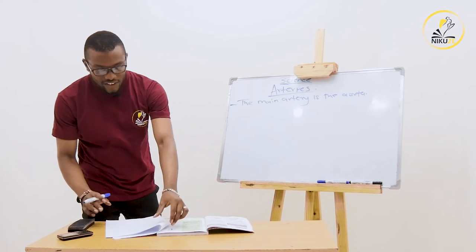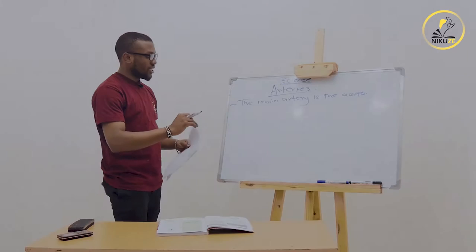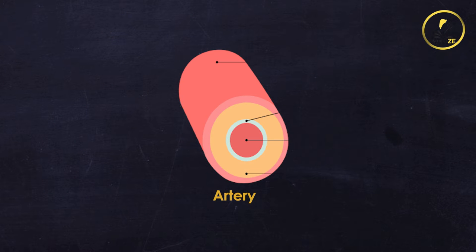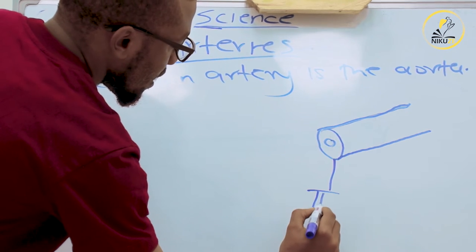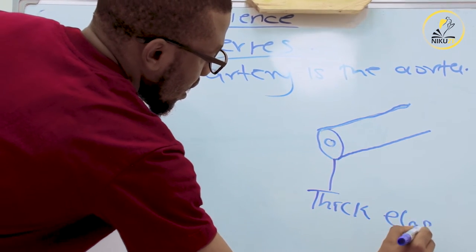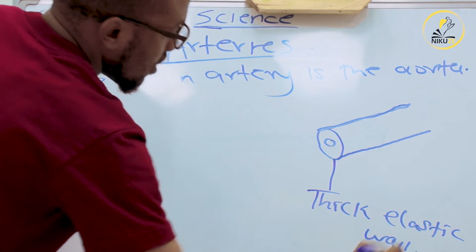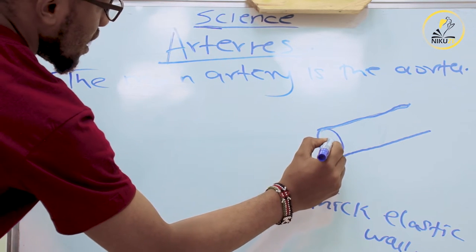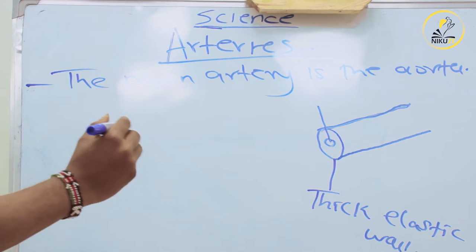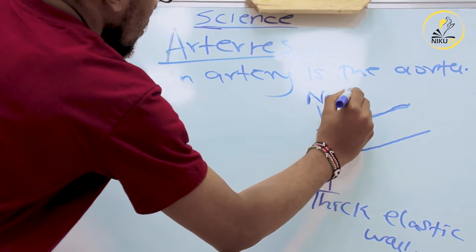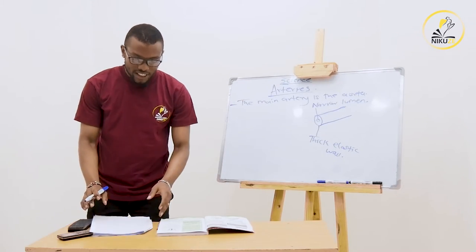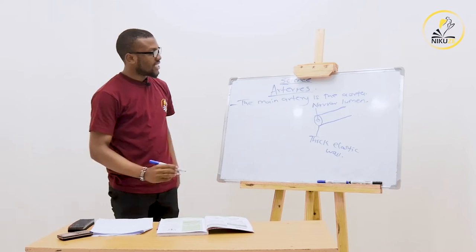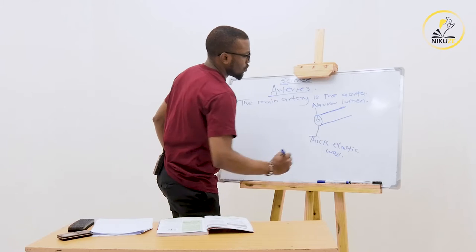Now let's look at the characteristics of arteries. I'll start by drawing the structure so we can identify the characteristics. This part here is the thick elastic wall - it is thick as you can see. This one is the lumen, and this lumen is narrow - we talk of a narrow lumen. This hollow part here is the narrow lumen.